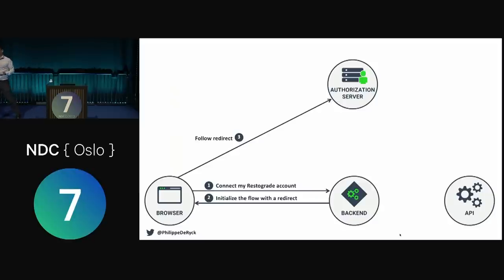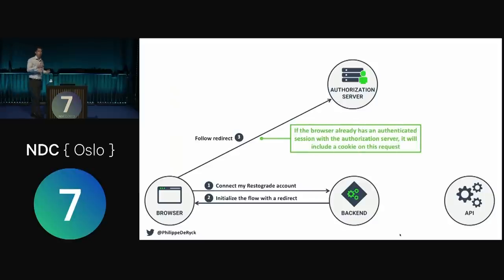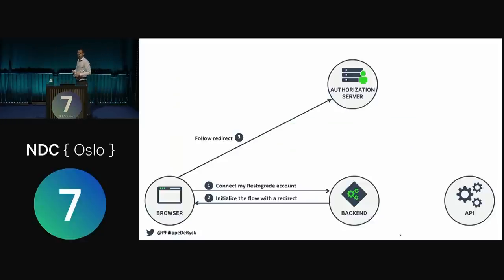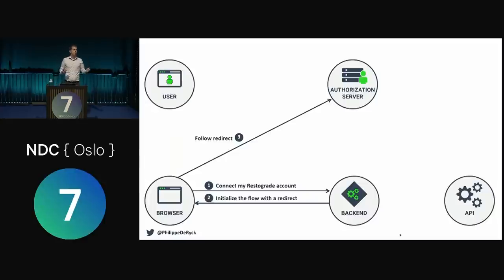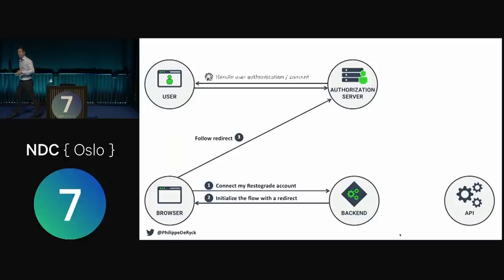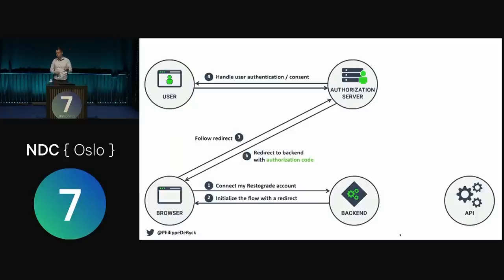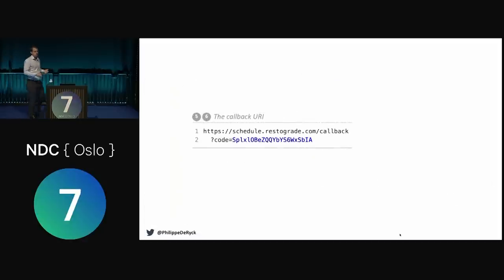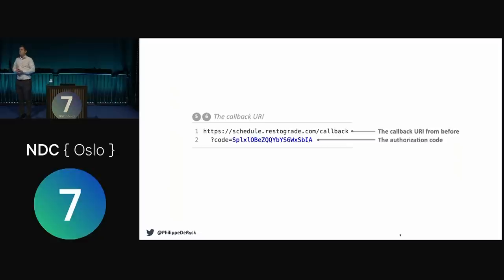If the browser has an active session, the authorization server would know who you are and you don't have to authenticate. If there's no active session, there will be authentication. The authorization server will ask who you are and there's optional consent — 'are you sure you want to give this application access to that API on your behalf?' When that is done, we get the authorization code returned to the callback URI via the browser redirect, and the back-end application retrieves that authorization code from the URL.